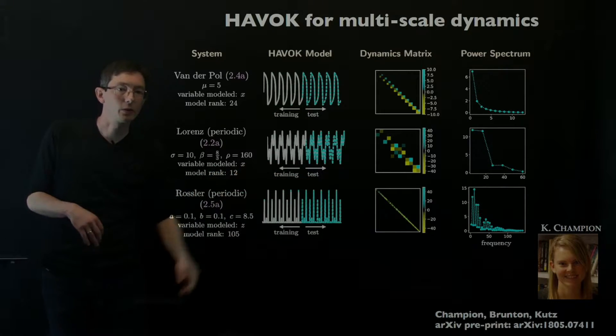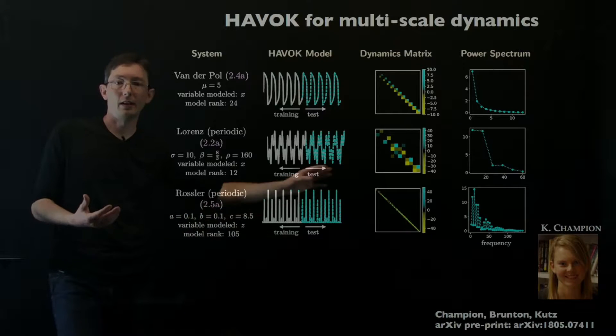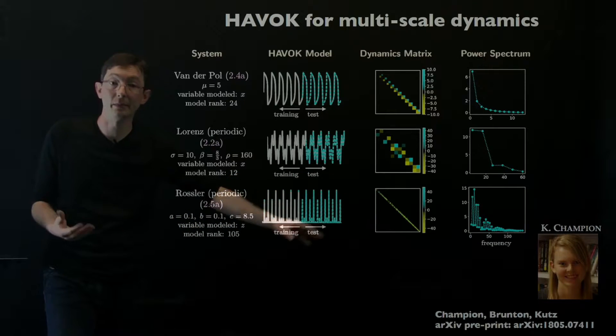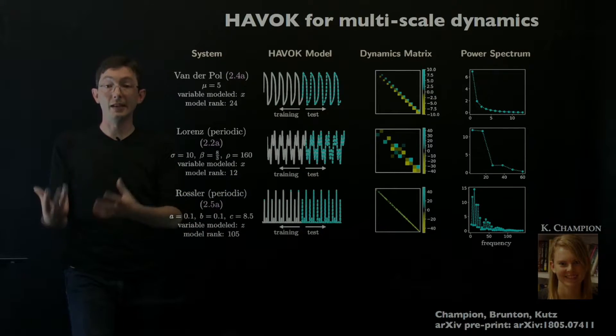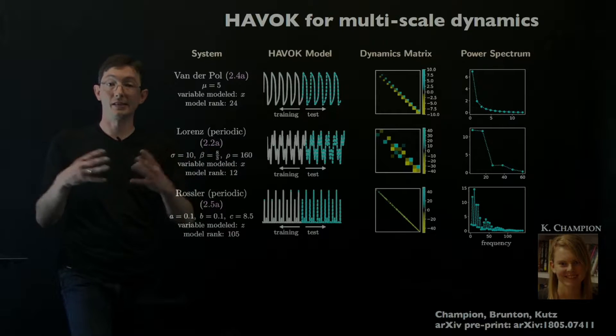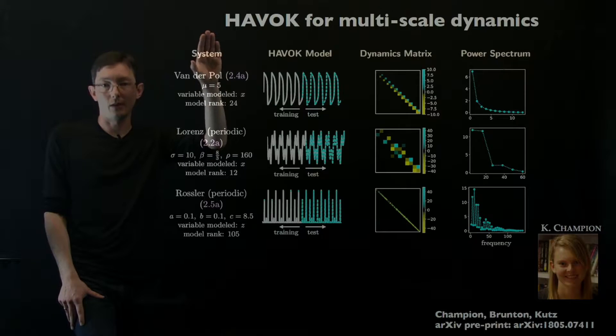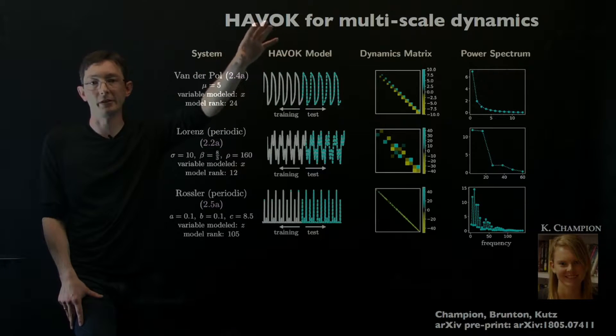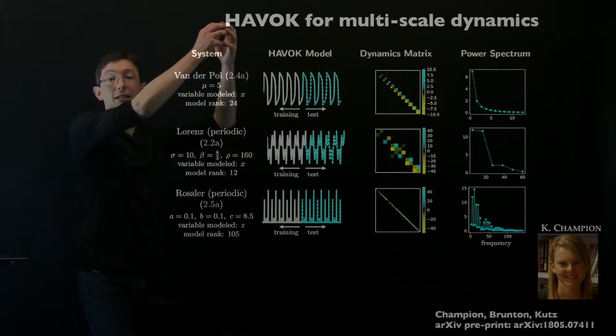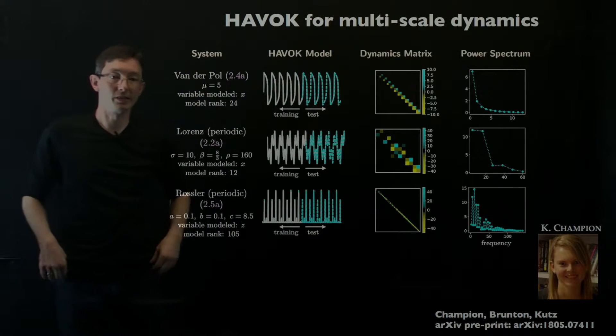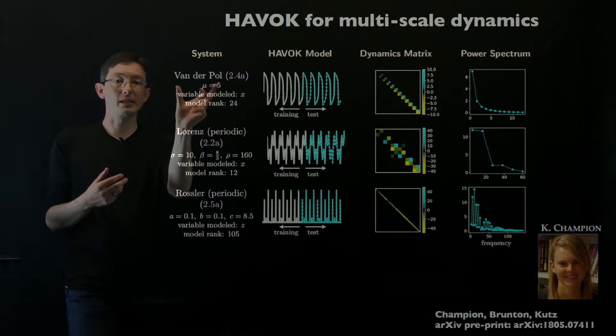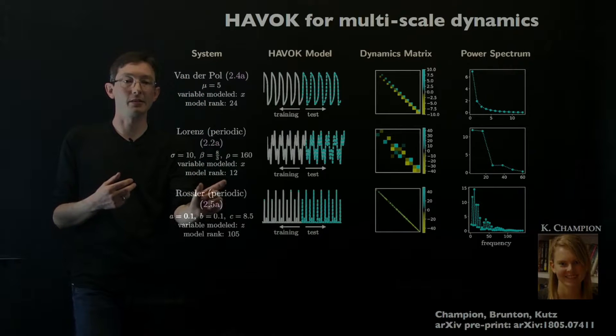So this is work with Kathleen Champion, who is working with Nathan Kutz and myself on applying these data-driven methods to multi-scale systems in time. And so this is a really nice use of this Henkel alternative view of Koopman, this time delay Koopman for multi-scale dynamical systems. So she's looked at a number of systems: van der Poel, Lorentz, Rossler.